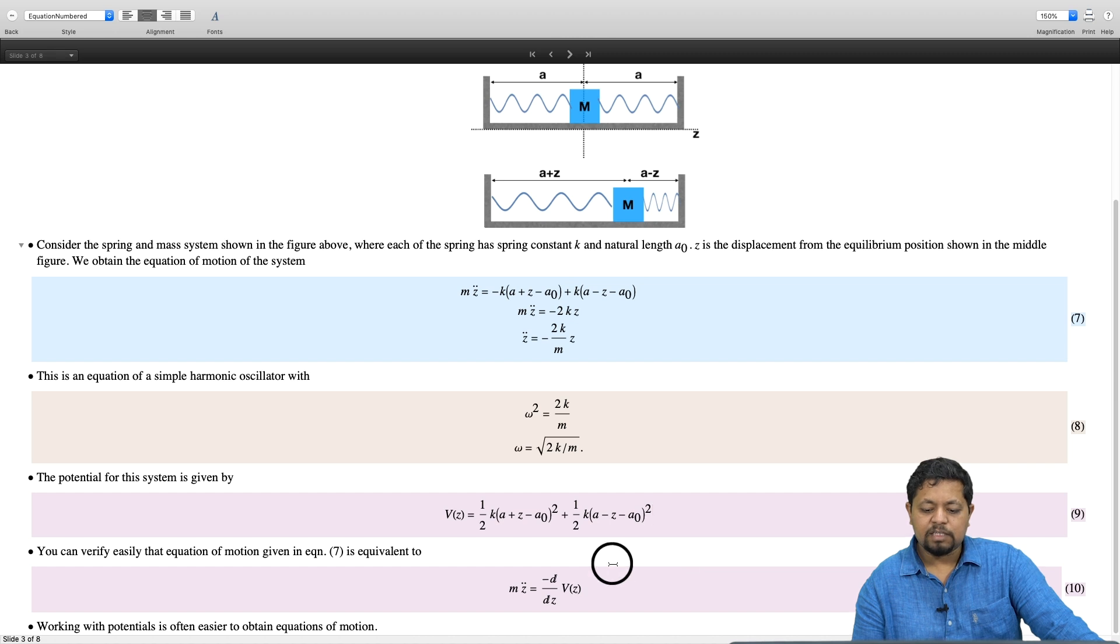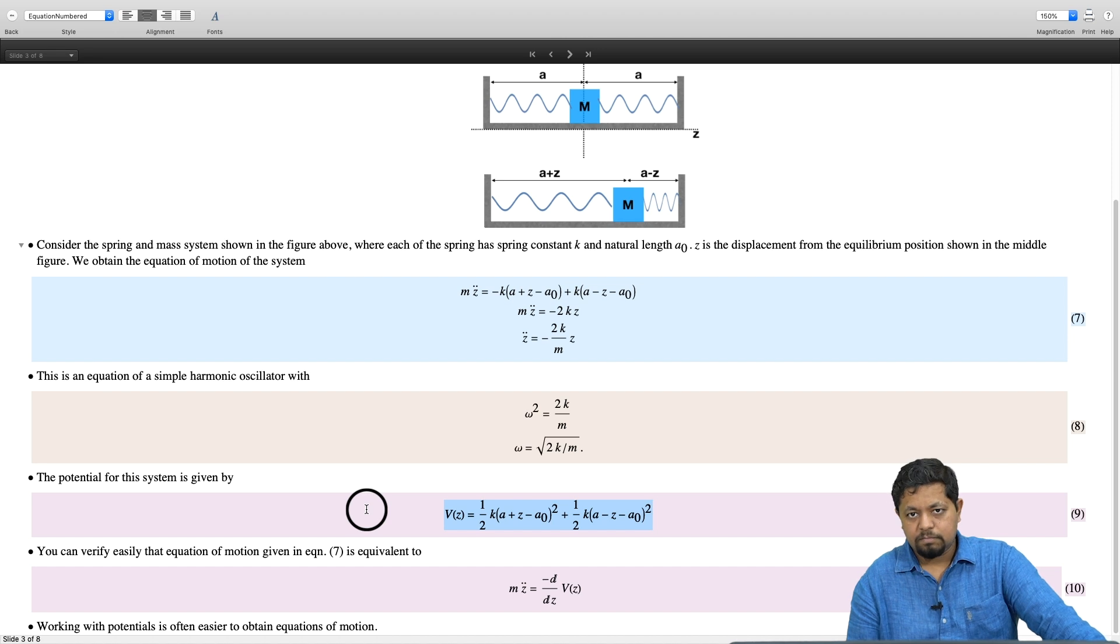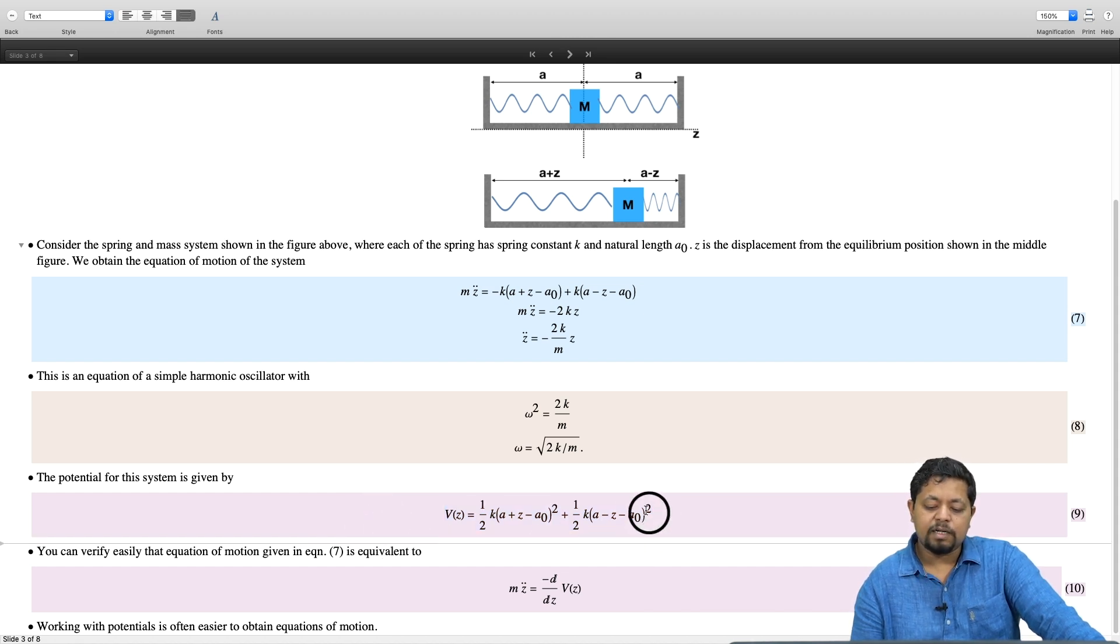And that is another way of confirming that the system follows simple harmonic oscillation. The alternate way by looking at the potential, you can directly determine whether the system follows simple harmonic oscillation or not. If the potential is quadratic, then the system will follow simple harmonic oscillation. In this case, if you want, you can go ahead and test, check that this potential is quadratic.